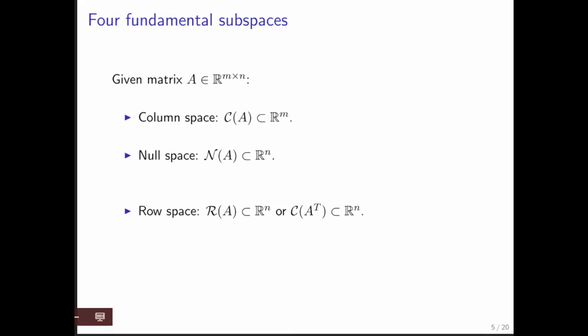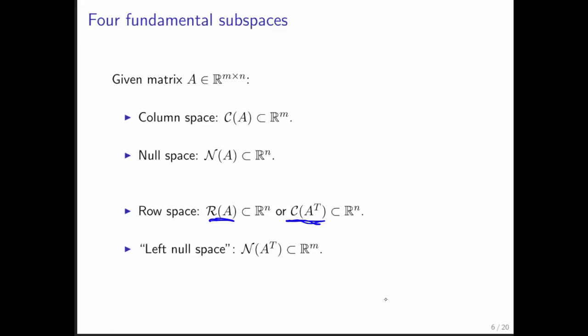Then there is the row space, which you haven't seen yet why that's so important. And finally, there is what's known as the left null space. The row space of A is the same as the column space of A transpose. And similarly, the left null space of A is the null space of A transpose.